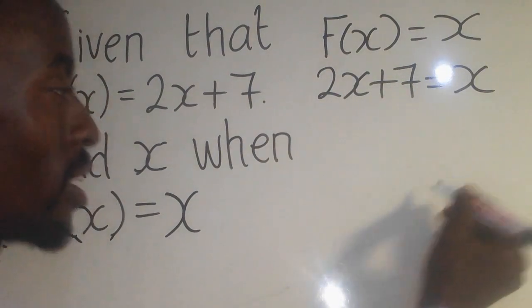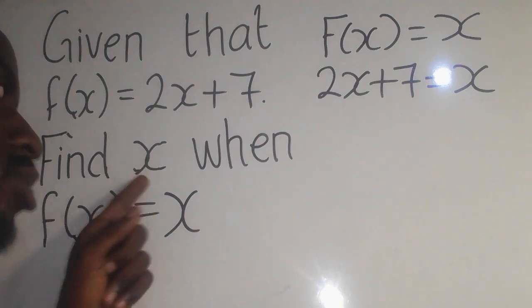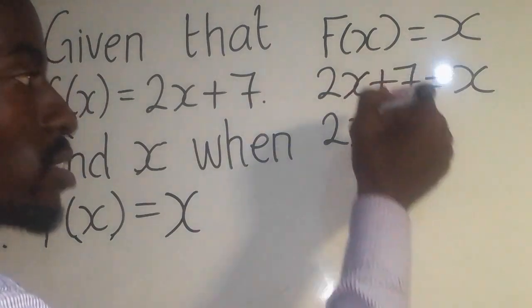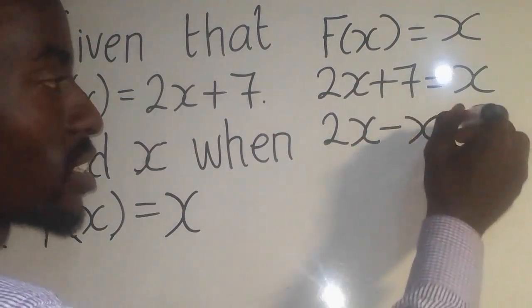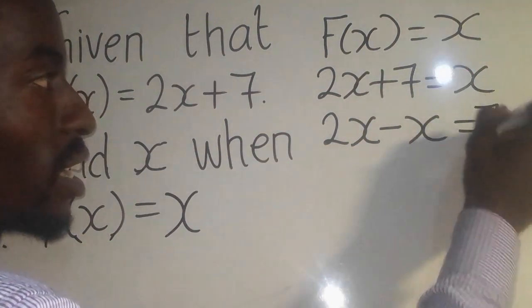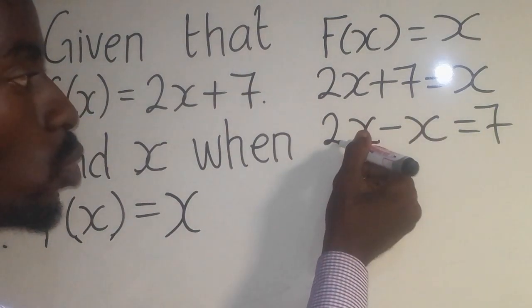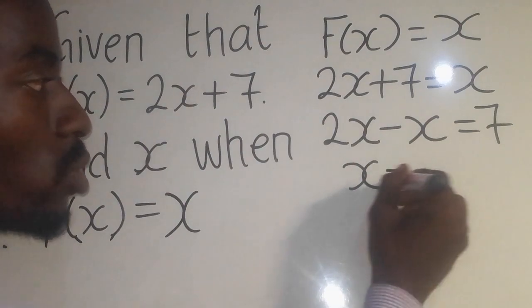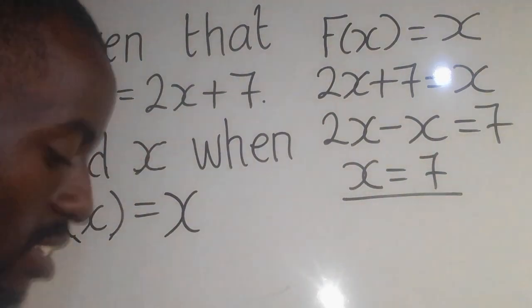We put the like terms together because we want to find what is the value for x. So it will be 2x. When this x comes to this side, it will be negative x equal to 7. You have seen that? So 2x minus x is going to give me x equal to 7. So this is the answer.